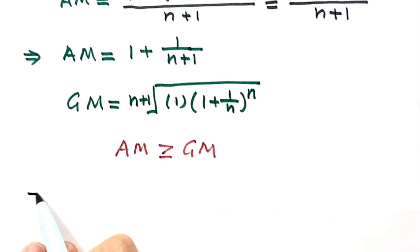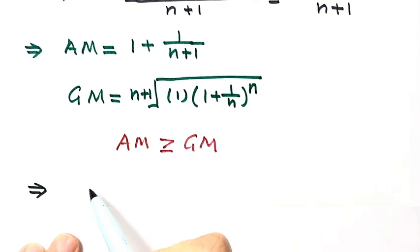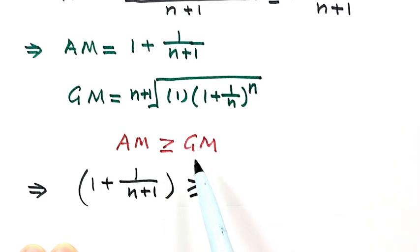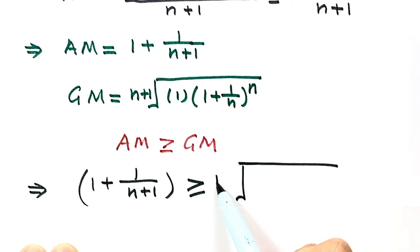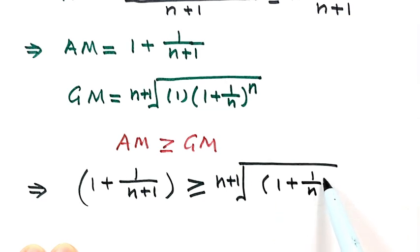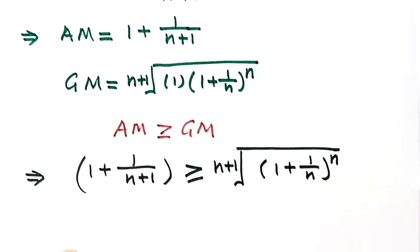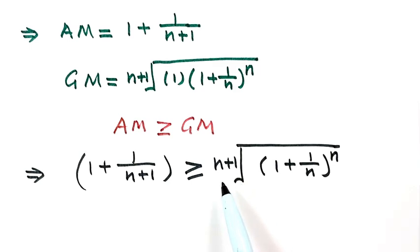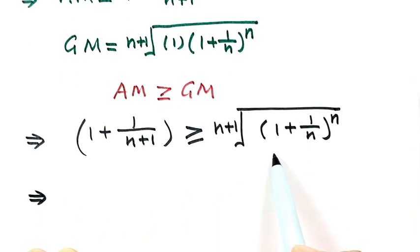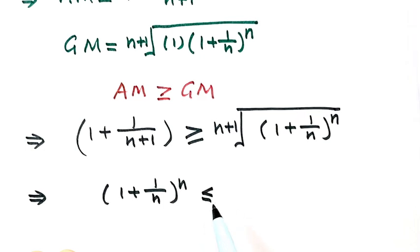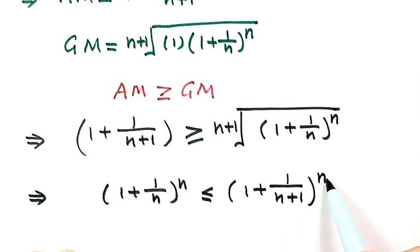Now let's apply the AM-GM inequality: the arithmetic mean is bigger than or equal to the geometric mean. So (1 + 1/(n+1)) ≥ the (n+1)-th root of (1 + 1/n)^n. To get rid of the (n+1)-th root, we raise both sides to the power of n+1. This gives (1 + 1/n)^n ≤ (1 + 1/(n+1))^(n+1).